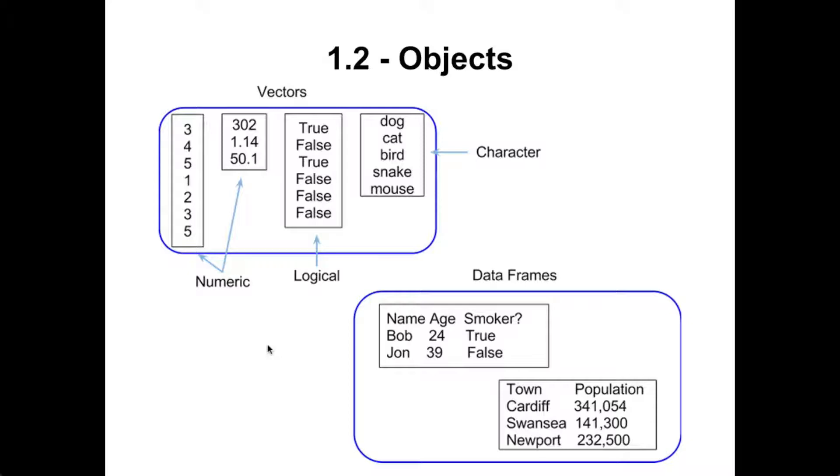So for example you can have a set of numbers and you can use the plot method to plot those numbers. But you could also have a regression analysis which is an object and be able to plot that using the same command.